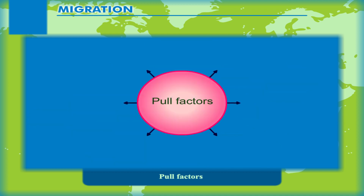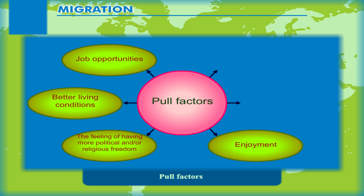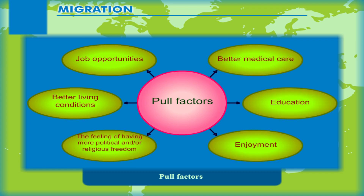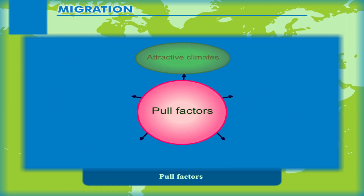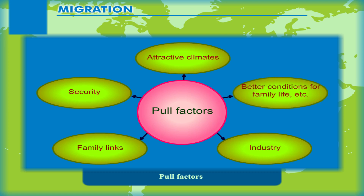Pull factors include: job opportunities, better living conditions, the feeling of having more political and/or religious freedom, employment, education, better medical care, attractive climates, security, family links, industry, and better conditions for family life, etc.